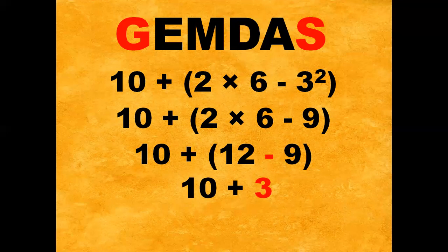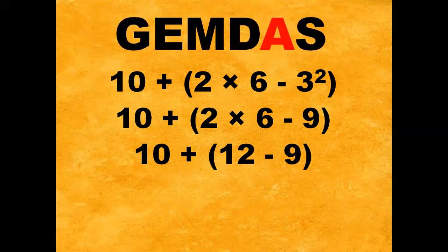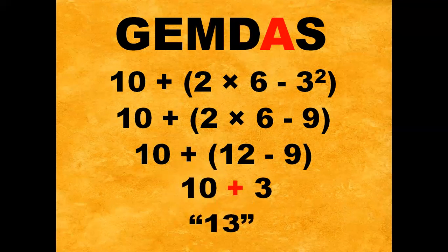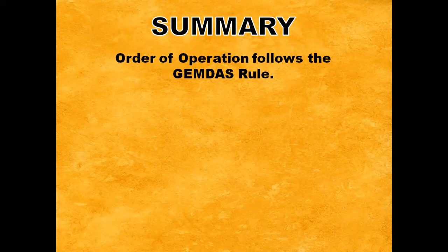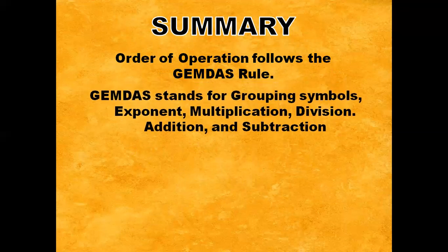And last, the remaining operation is addition: 10 plus 3, the answer is 13. Always remember, order of operations follows the GEMDAS rule — GEMDAS stands for grouping symbols, exponent, multiplication, division, addition, and subtraction.